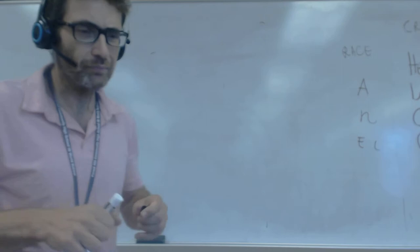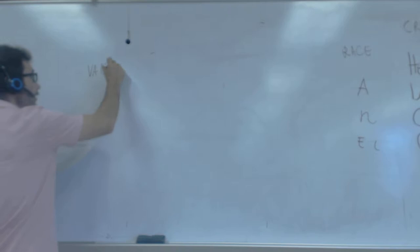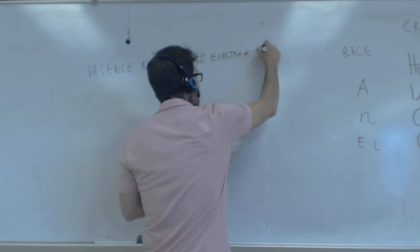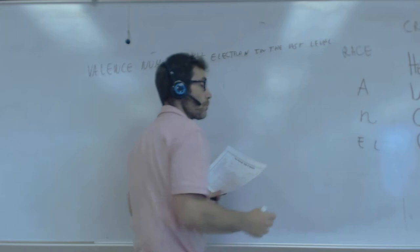So that depends on the balance number. The balance number is the number of electrons in the last level, and it goes from zero to eight.